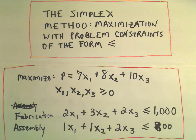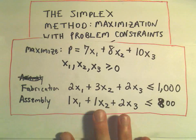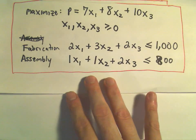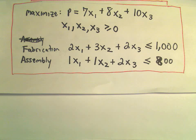All right, this is going to be part two of my simplex method video, and in this case we're going to try to maximize the profit function P equals 7x1 plus 8x2 plus 10x3.